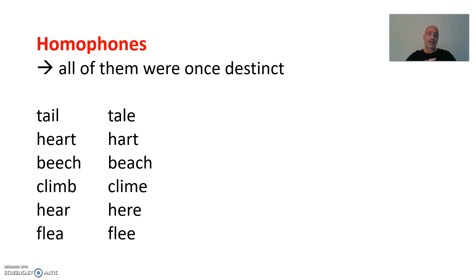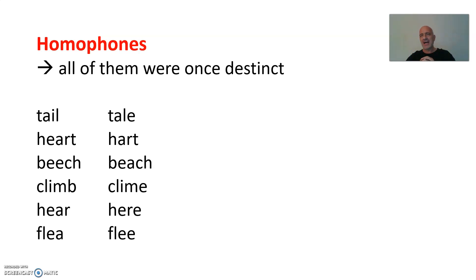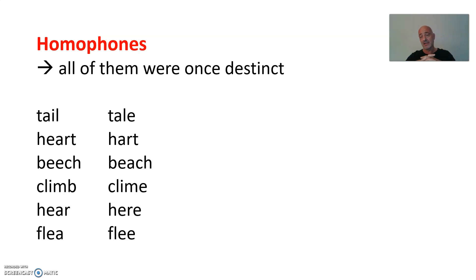Homophones — loads of homophones in English, which were all distinct once. 'Tail' and 'tale' — two different words that didn't sound alike 600 or 700 years ago. 'Heart'/'hart', 'beach'/'beech', 'climb'/'clime', 'flee'/'flea' — there are loads of those. This is why English is so nice to pun on. Loads of puns in Shakespeare and so on, because these homophones were produced by historical sound changes which made words sound alike that had previously sounded very dissimilar.